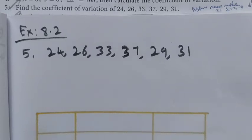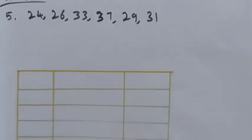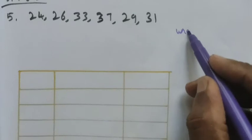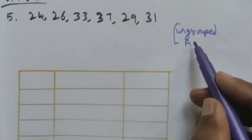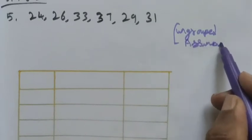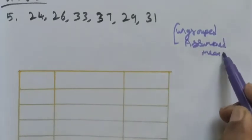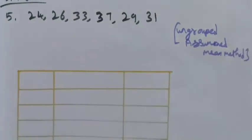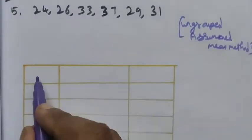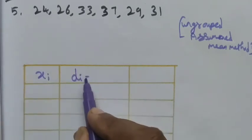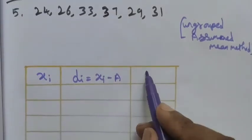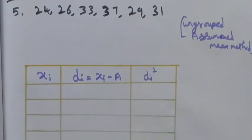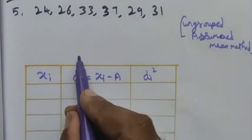Let me find the standard deviation and mean first. The given data is ungrouped data, so I am going to use the assumed mean method. Here we have the columns: xi, and deviation di equal to xi minus A (the assumed mean), and di squared.